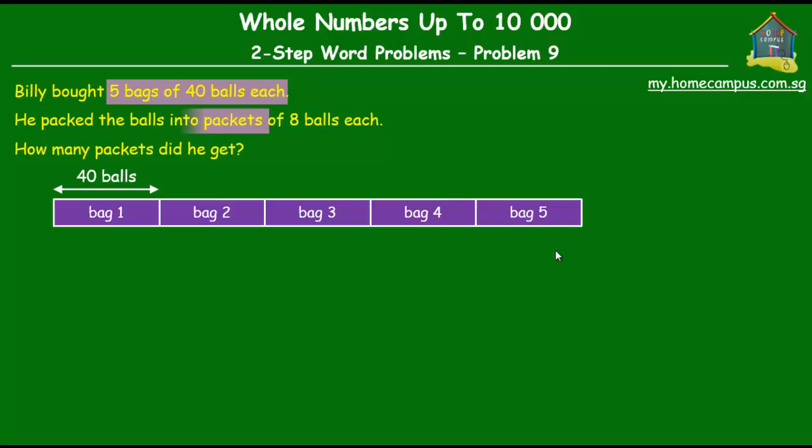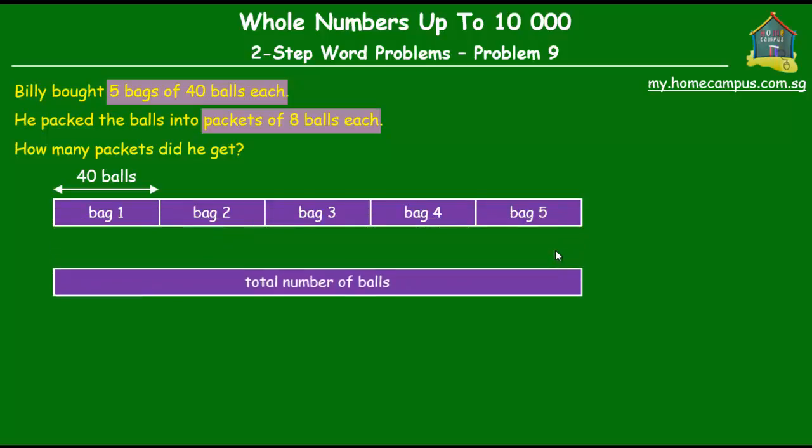And then what he did was, he packed them into packets of eight balls each. So he took all the balls, that was the total number of balls in the five packets. He took those balls and he re-packed them into smaller packets, each packet had eight balls. So he opened all the five bags, took all the balls, then re-packed them into smaller packets of eight balls each. Now what we have to find out is how many packets he got.